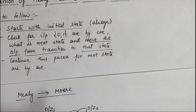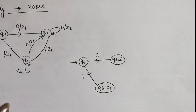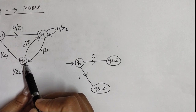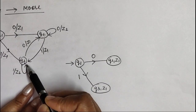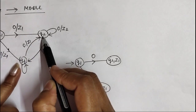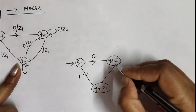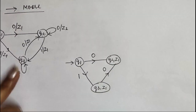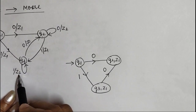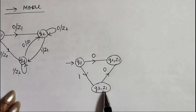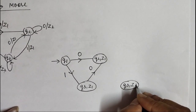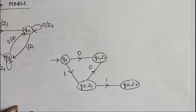Now the third step: we continue this process for all next states one by one. The next states to consider are Q2 and Q3. Taking Q3 first — Q3 again has two inputs, 0 and 1. For input 0, Q3 with input 0 moves to state Q2 with output Z1, and we already have Q2 with Z1, so we add a transition with input 0. For input 1, Q3 with input 1 remains in the same state Q3 but with output Z2. Since we have Q3 with Z1 but not Z2, we create a new state Q3 with Z2 output, and add the transition with input 1.